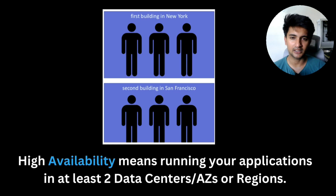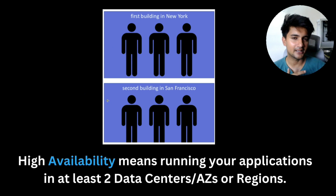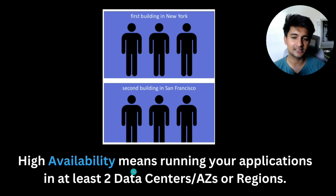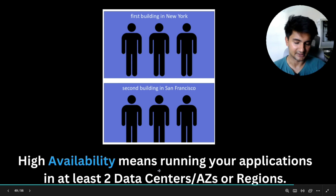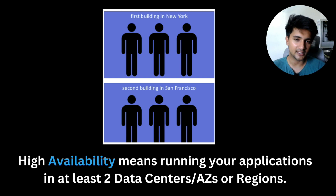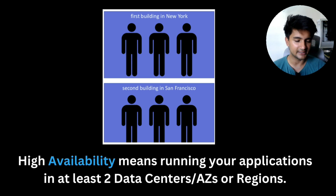To explain high availability with an example: say you're a company with two offices, one in New York and one in San Francisco. If due to fire or earthquake your New York office is not operable, customers can still contact you in San Francisco. High availability means running your application in at least two data centers, two AZs, or multiple regions. You can create your first server in US-East-1a and a second in US-East-1b, so that if US-East-1a goes down, your application is still running on US-East-1b. This is called multi-AZ deployment.